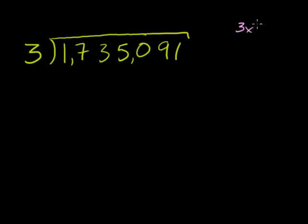So 3, so we just move 1 to the right. 3 goes into 17 how many times? Well, 3 times 5 is equal to 15. And 3 times 6 is equal to 18. And that's too big. So 3 goes into 17, remember right here, 5 times. 5 times 3 is 15. And we subtract. 17 minus 15 is 2.